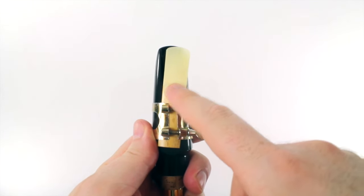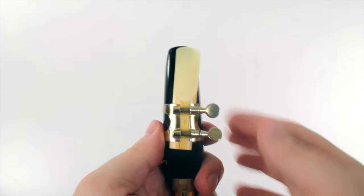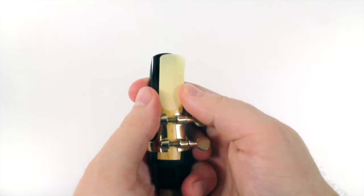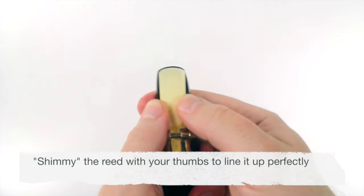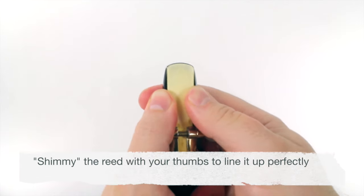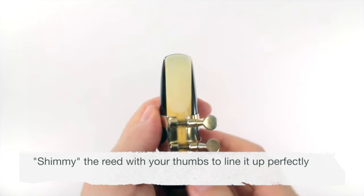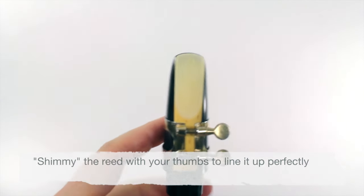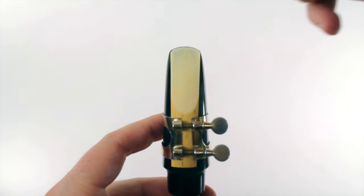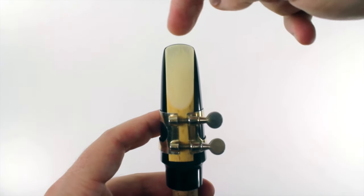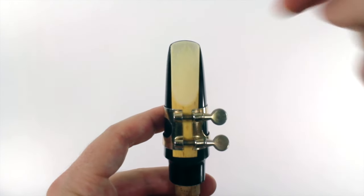Notice that the reed is kind of crooked. It's not lined up with the mouthpiece. Take your two thumbs and shimmy the reed back and forth until it's just perfectly even with the tip of the mouthpiece. You should see just a little line of the black part of the mouthpiece above.